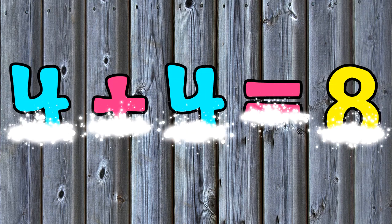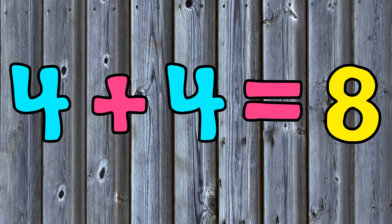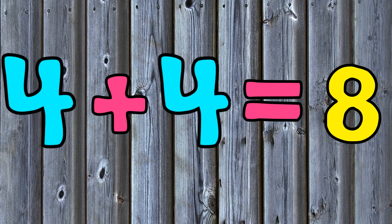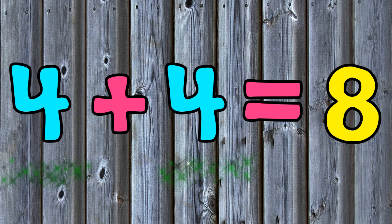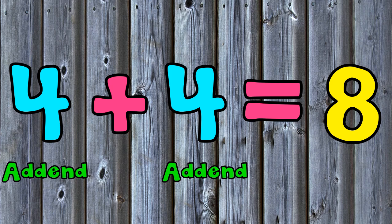A doubles fact is an addition problem where the addends are the same. For example, in this addition problem 4 plus 4 equals 8, the addends 4 and 4 are the same. Because the addends are the same, this is a doubles fact.